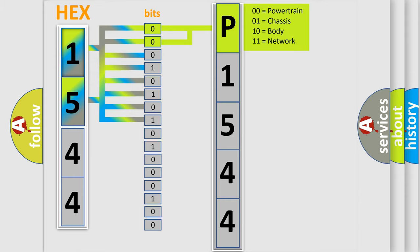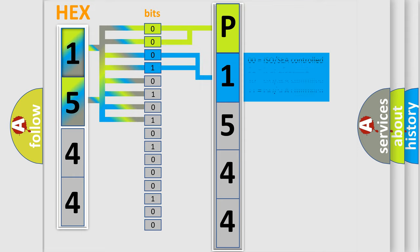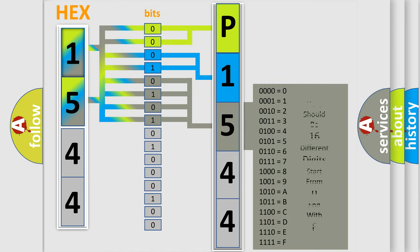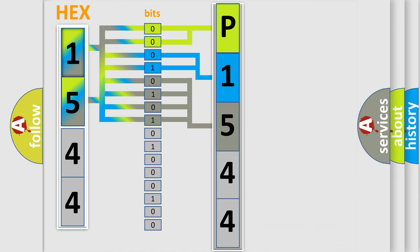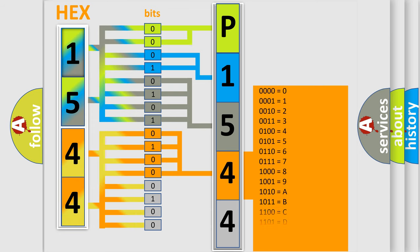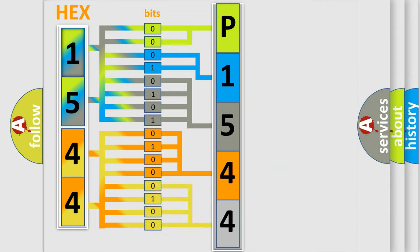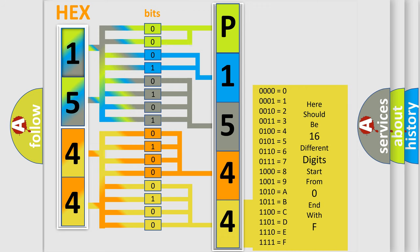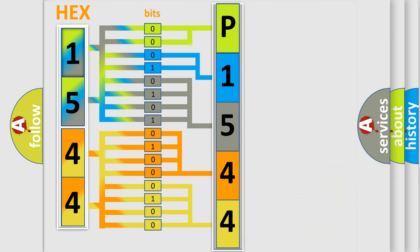By combining the first two bits, the basic character of the error code is expressed. The next two bits determine the second character. The last bits of the first byte define the third character of the code. The second byte is composed of a combination of eight bits — the first four bits determine the fourth character, and the last four bits define the fifth character. A single byte conceals 256 possible combinations. We now know how the diagnostic tool translates received information into a more comprehensible format.